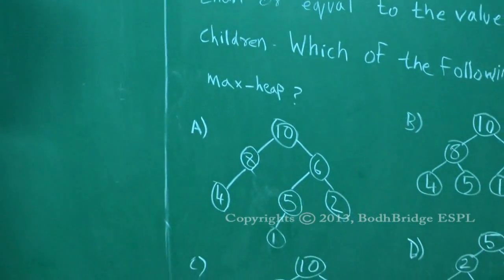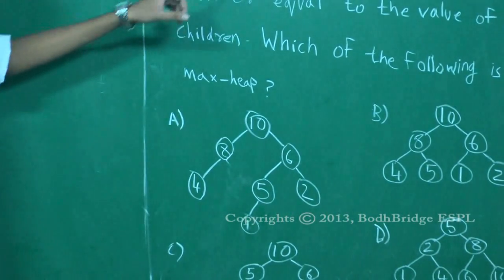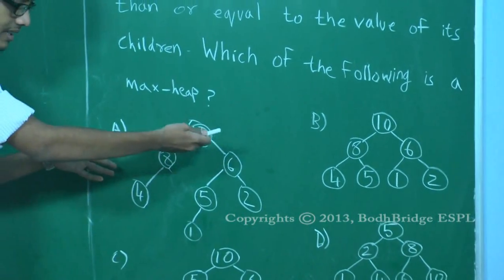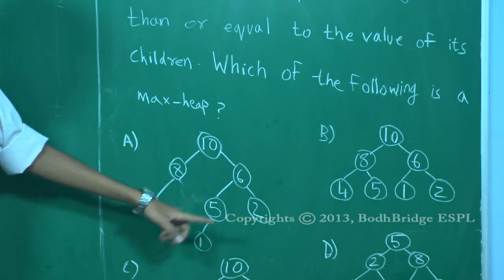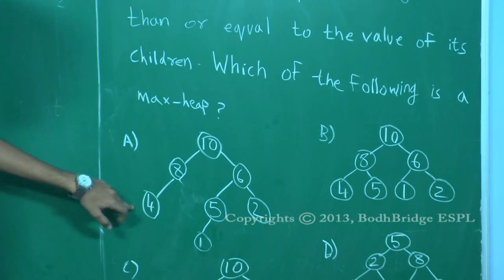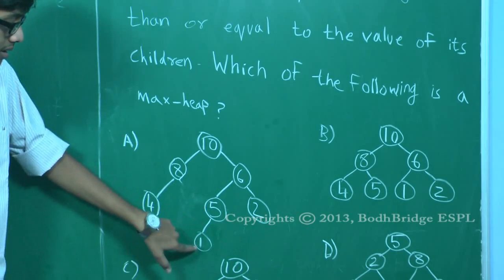So take option A. Option A satisfies the heap property because every parent is greater than or equal to its children. Say take 10. 10 is greater than 8, 6, 4, 5, 2, 1. 8 is greater than 4. 6 is greater than 5, 2, 1. 5 is greater than 1.